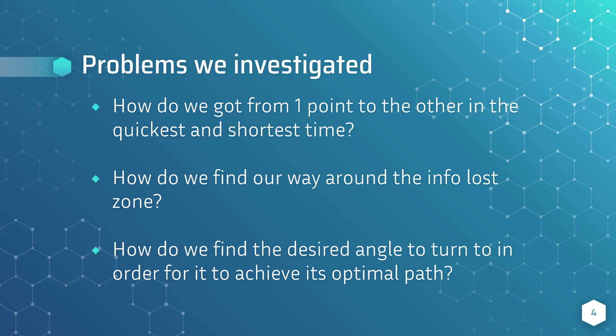These are the problems that I have decided to investigate to improve the program. To solve these problems, I have come up with two strategies. To find the shortest and quickest path, I have decided to adopt the A-star pathfinding algorithm to derive the shortest path. The other strategy is to use trigonometry to traverse through the info-loss zone and turn the robot to its desired angle.